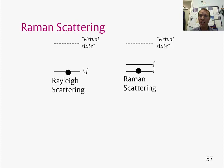There are two types of scattering we need to think about. The first is so-called Rayleigh scattering, where a molecule absorbs light, is excited to a virtual state, and then falls back down to the same state, emitting the energy that was originally absorbed. So the energy of the light emitted is going to be the same as the light absorbed.